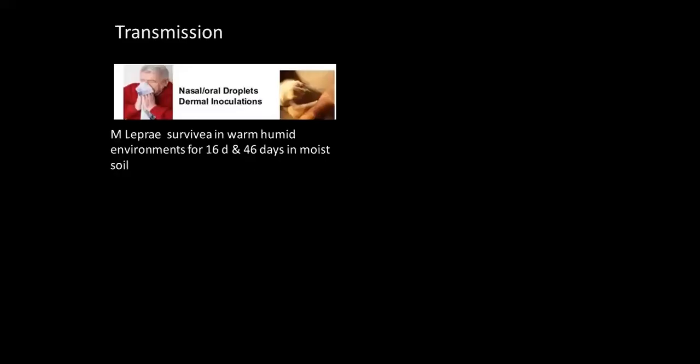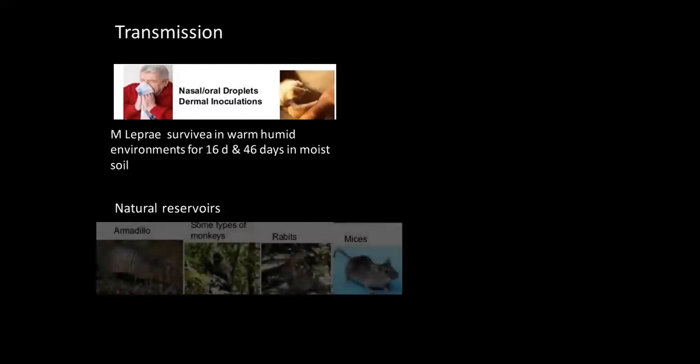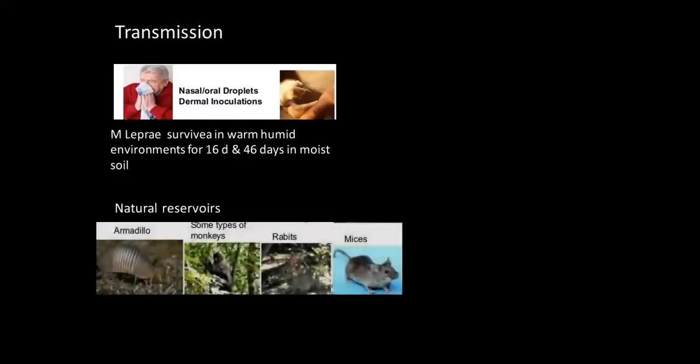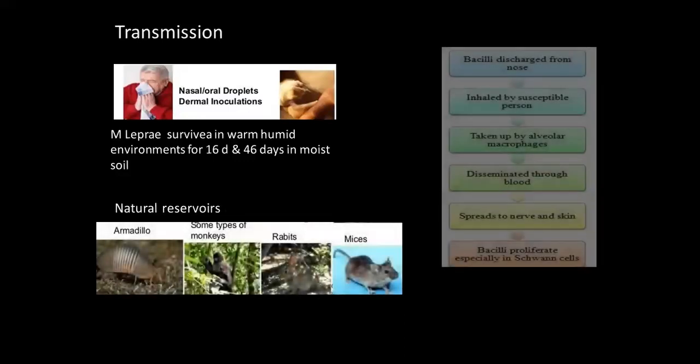How is it transmitted and what is the immunology? Mycobacterium leprae survives in warm, humid environments for 16 to 48 days in moist soil. There are some natural reservoirs as well — the armadillo, monkeys, rabbits, and mice.